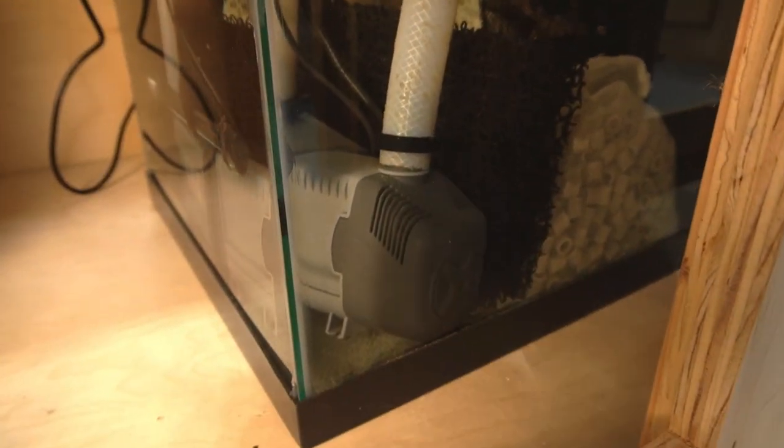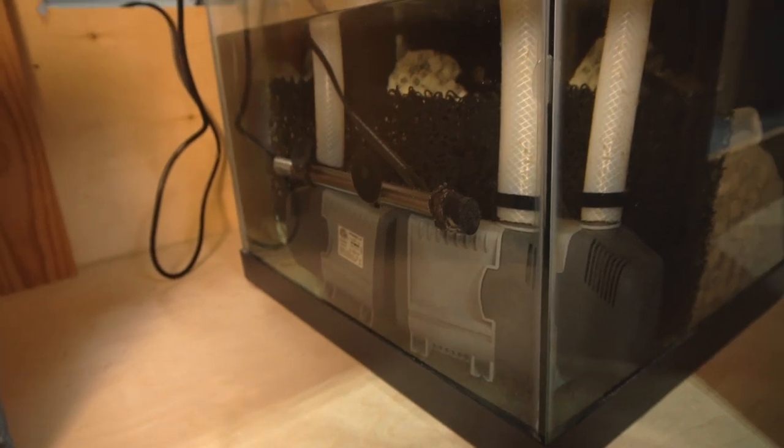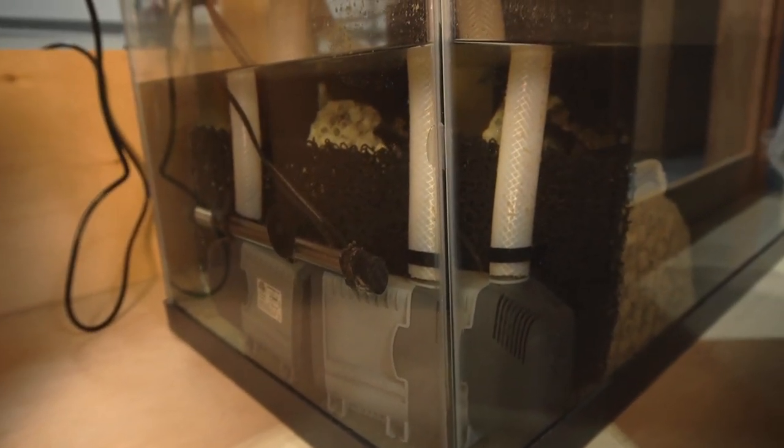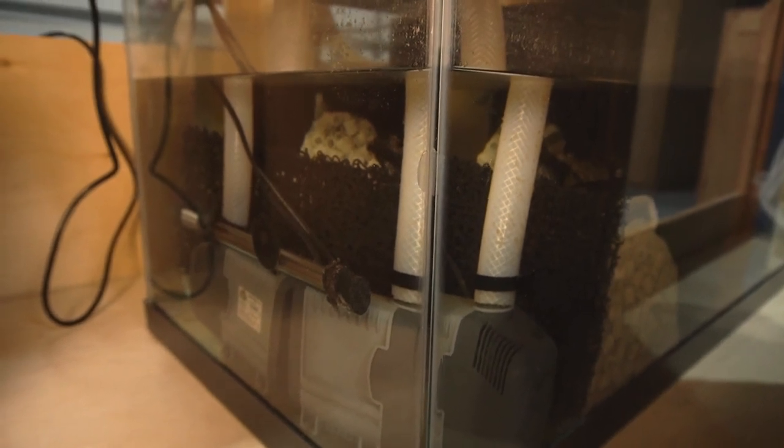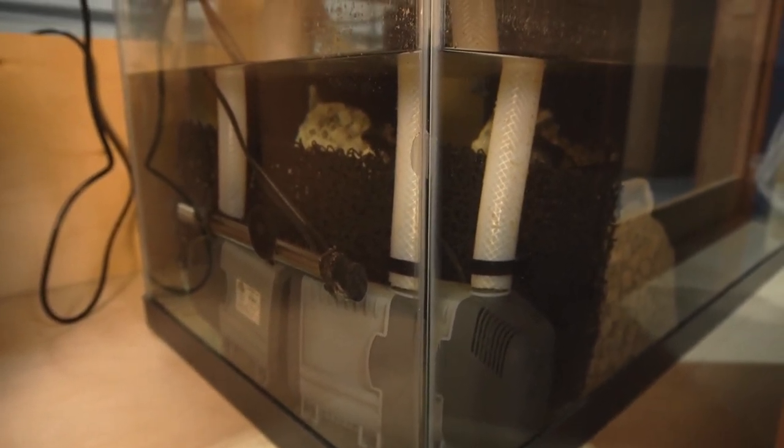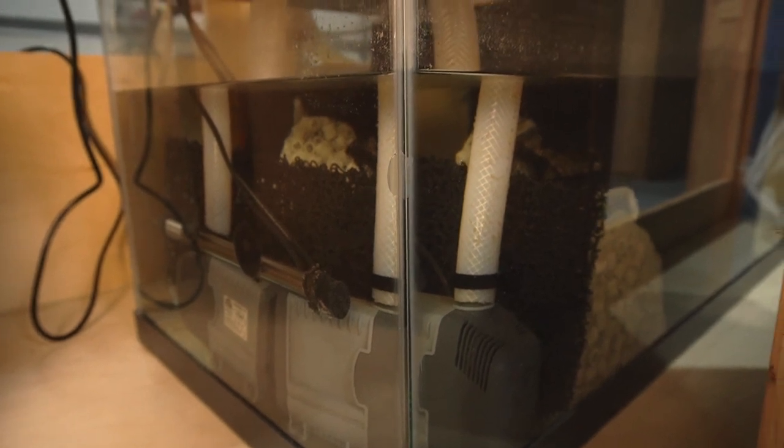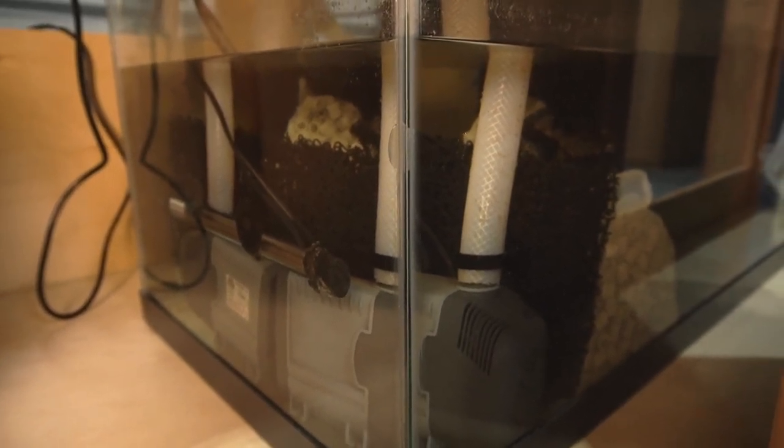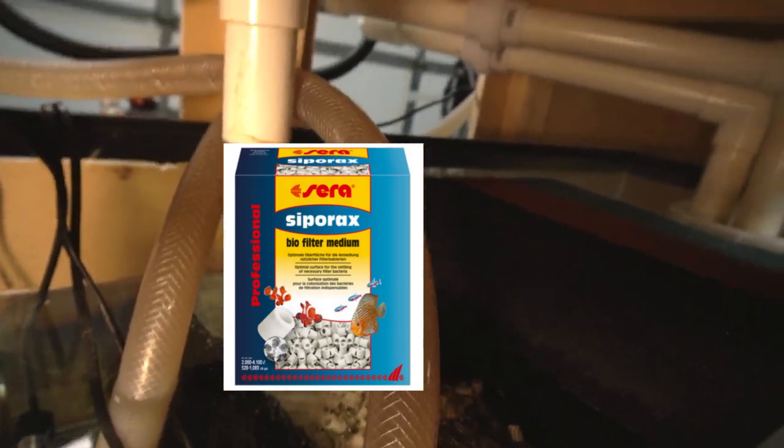This is where the water gets returned to the tank. And here are the two Sicce 5.0 Syncra pumps, along with a Hygger, I believe that's a 900 watt titanium heater. So you've got the heater and it's doing a really good job, keeps the tank at about 80. And there's also a mountain of Sera Siporax, Sera Siporax media. You can see it back there. But there's just a mountain of it behind that black border there. So the water travels through the sponges, through that Siporax, and then over to the pumps and then back to the tank.